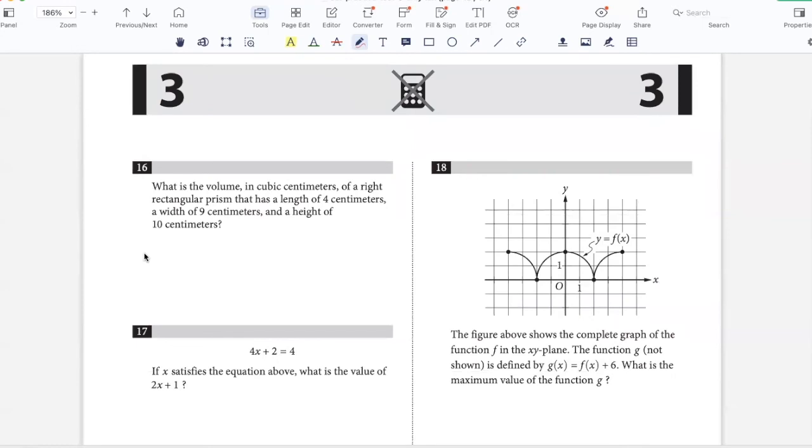What is the volume in cubic centimeters of a right rectangular prism that has a length of 4, width of 9, and a height of 10? Volume is length into breadth into height. So 4 into 9, 36 into 10, 360.